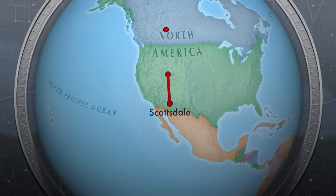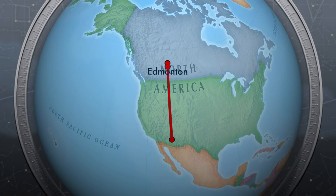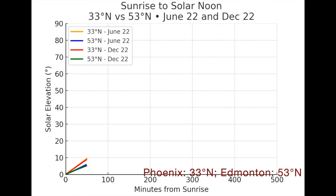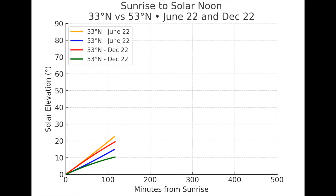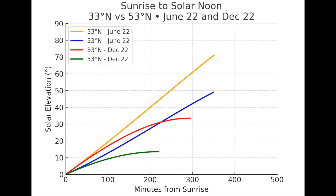Recently I was in Edmonton, Alberta for a few weeks with my solar telescopes. I was initially puzzled why the Sun looks so dim through the same telescope I used in Arizona at the same time of day. Then it dawned on me that due to Edmonton's 53-degree latitude versus Scottsdale's 33-degree latitude, the Sun was lower in the sky than I was accustomed to and I was looking through more air mass, which was dimming my view. My rule of thumb for when to image the Sun that worked in Arizona was completely wrong up in Edmonton.